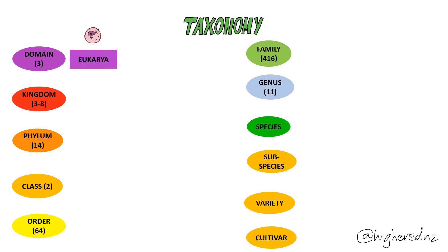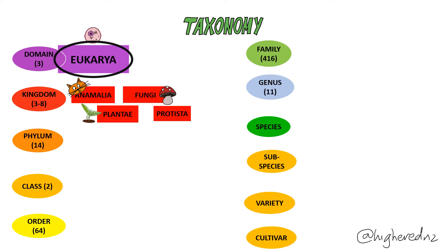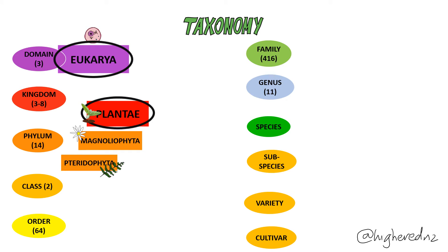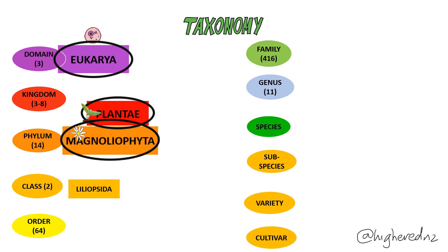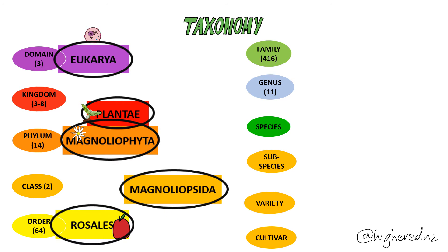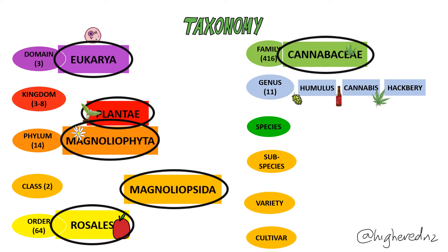The taxonomic system is broken down into different levels of classification, beginning with the most basic distinction between multicellular and single-cellular organisms. Then we come down into different kingdoms — animals, plants, fungi, protista, monera — between three and eight kingdoms depending on who you're talking to. Cannabis is obviously a plant. Plants are broken down into 14 different phyla, including Magnoliophyta, or angiosperms — flowering plants — which cannabis is. We then break it down further through classes, orders, and families; cannabis is in Cannabaceae. Cannabaceae has 11 different genera, including Humulus, Cannabis, and hackberry. Humulus includes hops, one of the plants responsible for beer — so it's interesting to know that Humulus and cannabis are cousins that diverged 27.8 million years ago.